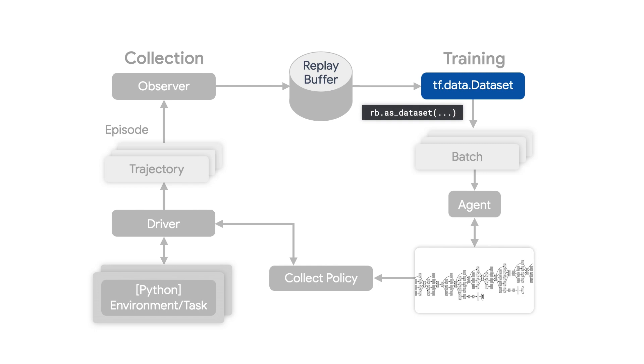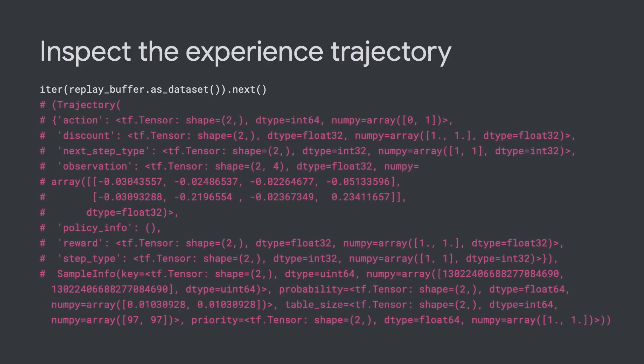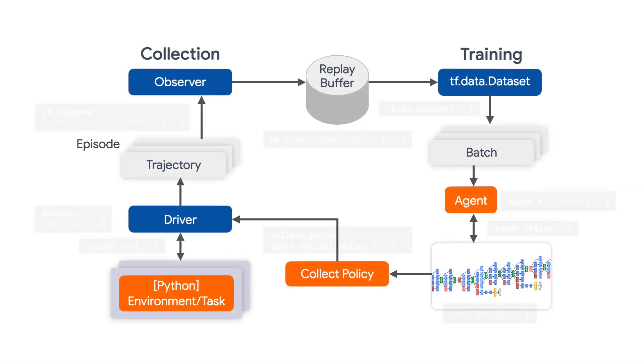After training data is collected into the replay buffer, we can sample it out as a TF dataset. Here's how our experience trajectories look like.